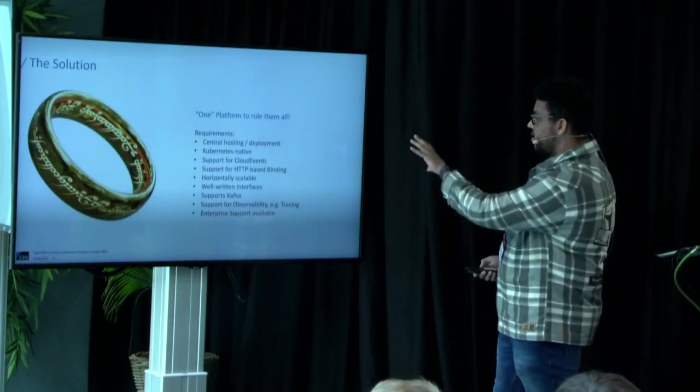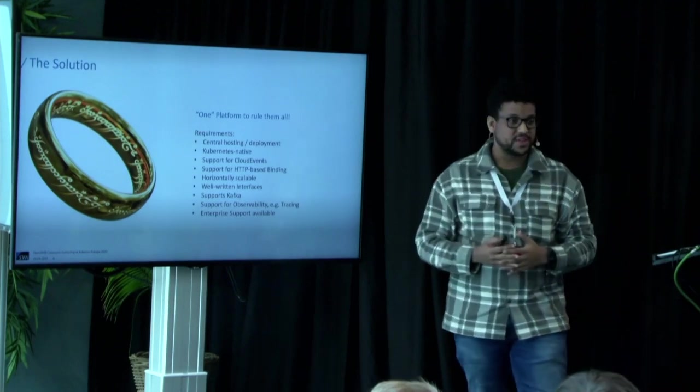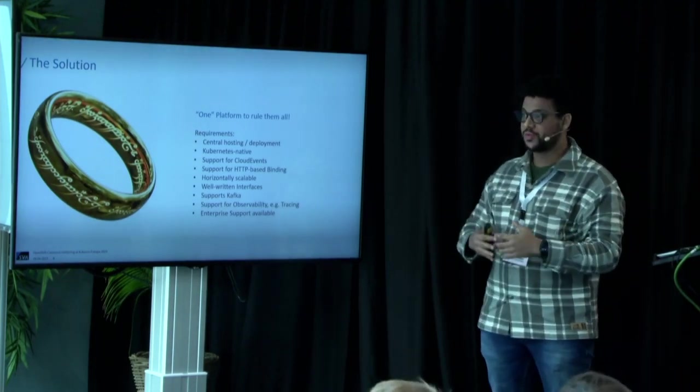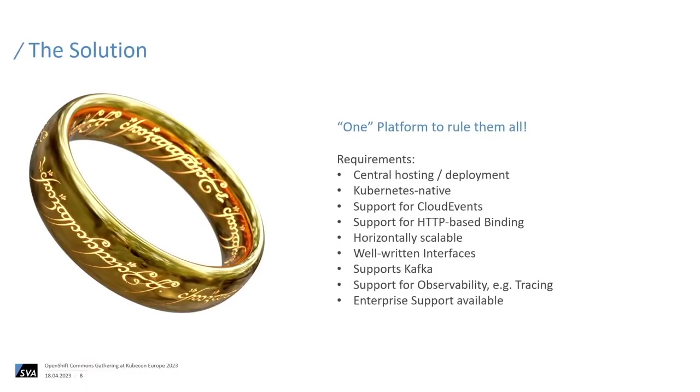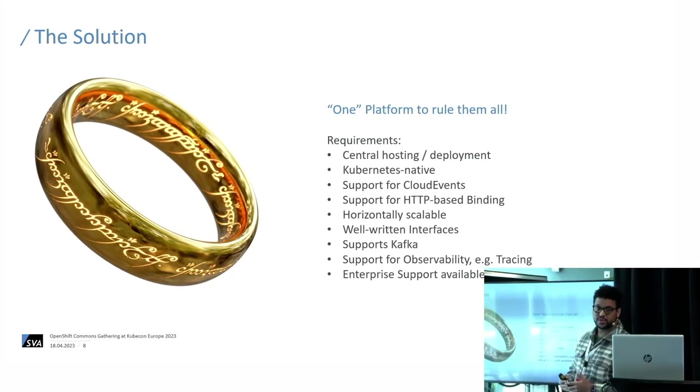The solution would be one platform to rule all these requirements at once. Requirements are central hosting with one team responsible for the central platform like AWS Lambda but on an on-prem system. It has to be Kubernetes native. Support for cloud events because that's the standard we set up to use for eventing, and it's being adopted by the industry. Azure, AWS are all using that to promote events in their systems. Support for HTTP-based bindings, horizontal scalable, supports Kafka or other message brokers as the underlying persistence technology, and support for observability and tracing. Also important, it's a big organization, it has to have enterprise support.